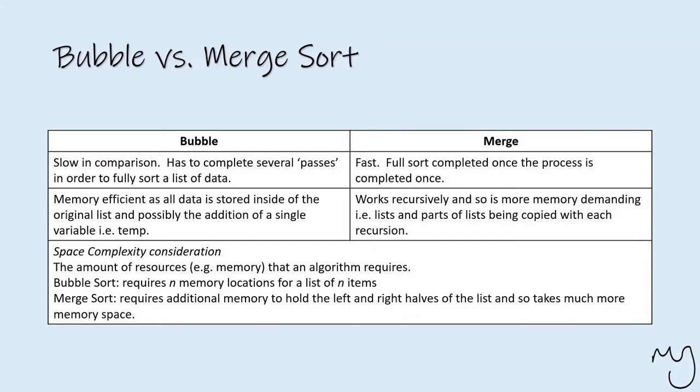The space complexity consideration, which is something that I referenced to you earlier that I'd like to touch on again, is essentially this idea that the amount of resources in terms of memory that an algorithm requires is what we consider to be space complexity. And the bubble sort requires n memory locations for a list of n items. So for every memory location you've got, you need a space to store that.